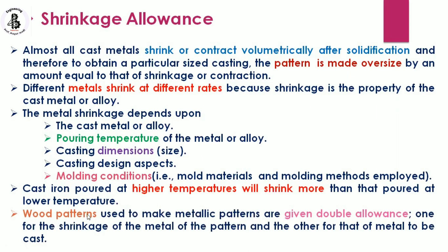Wood patterns used to make metallic patterns are given double allowances — one for the shrinkage of the metal of the pattern itself, and the other for the metal to be cast. That covers shrinkage allowances.